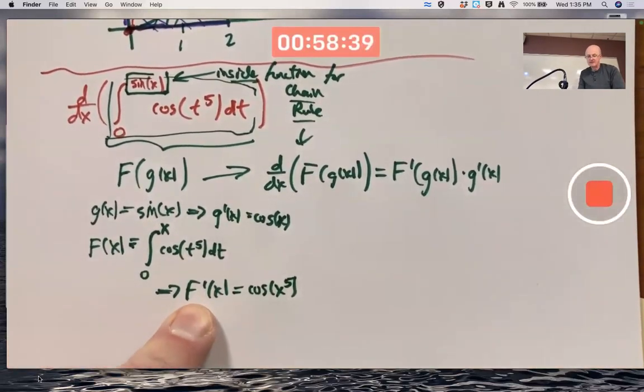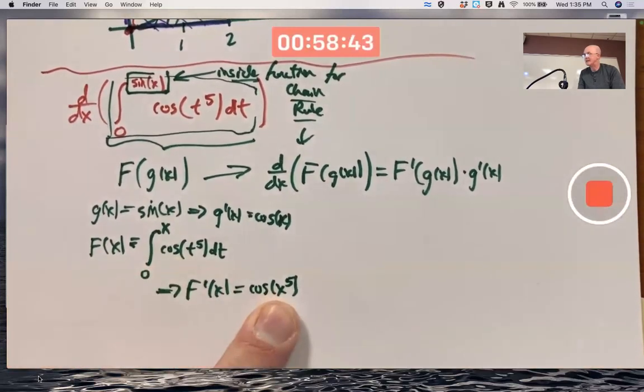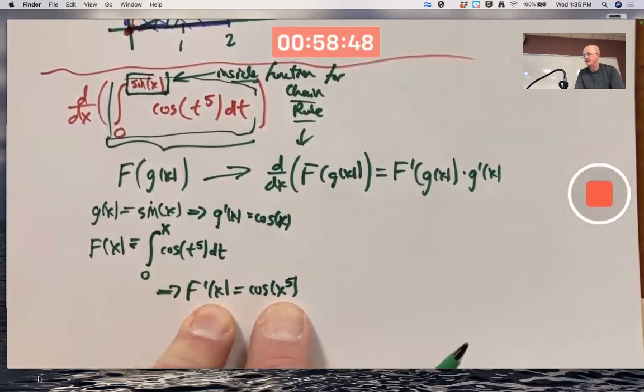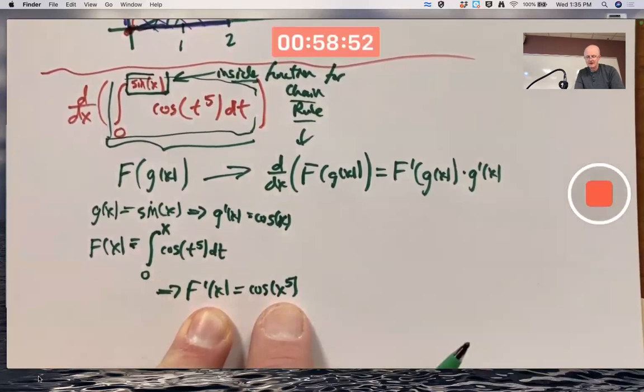The prime, the derivative symbol, cancels out the integral, and you're left with the integrand function, except using x instead of t, because you want these variables to be consistent with each other.